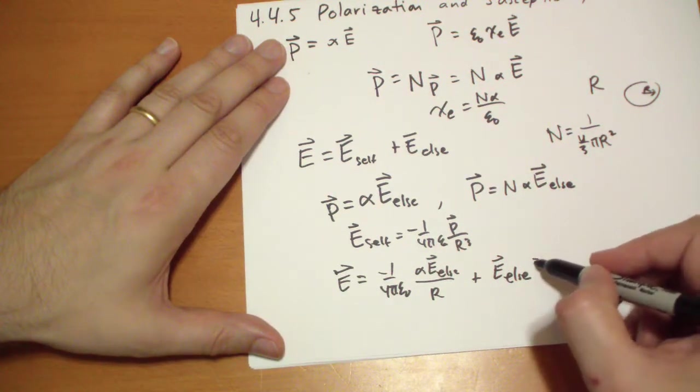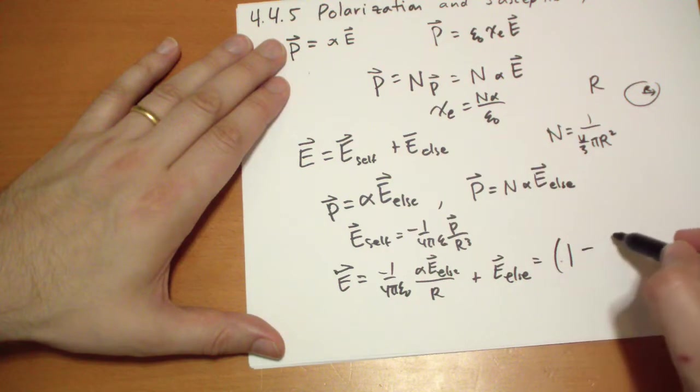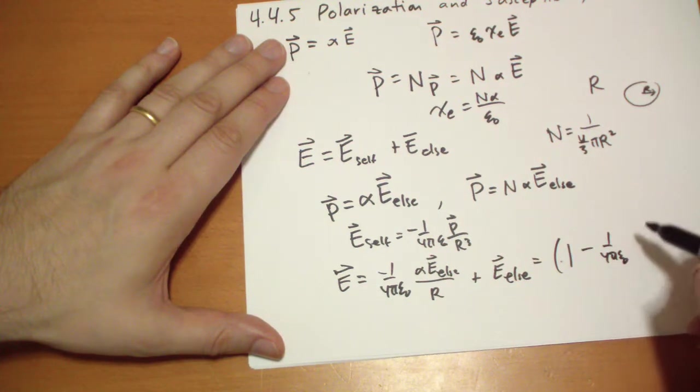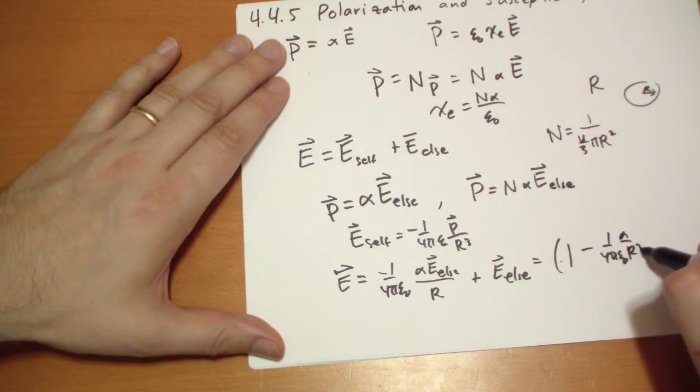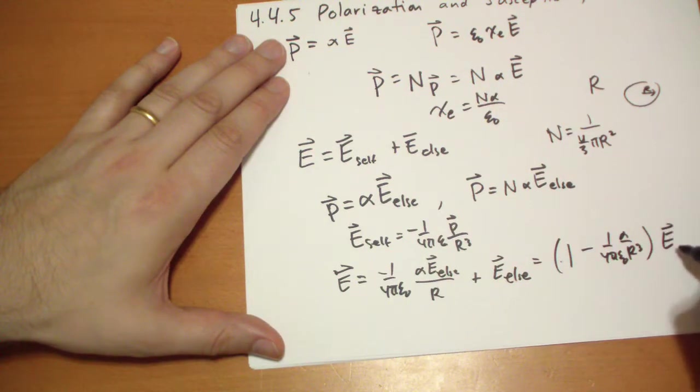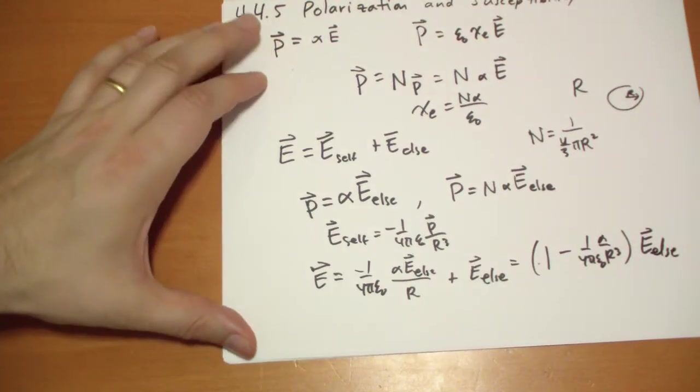And we can rewrite that as 1 minus 1 over 4 pi epsilon-naught, alpha over R cubed times the E-vector due to everything else.